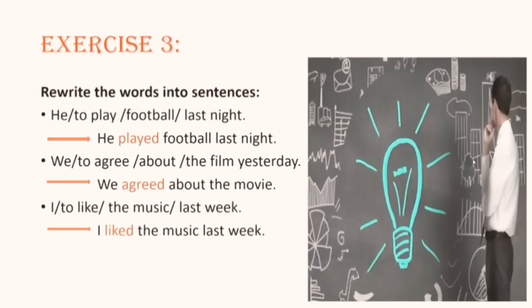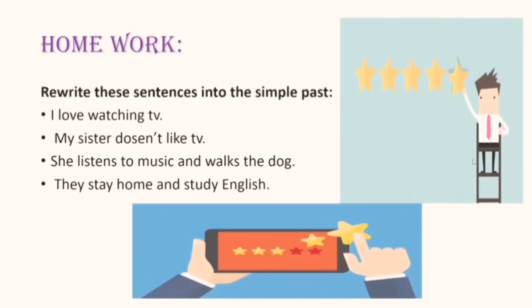So for the last thing we have to do is your homework, and it's going to be very simple again, just to help you remember the forms and practice your simple past form. Your homework, listen carefully. You have to rewrite these sentences into the simple past. Look at sentence number one: I love watching TV. Which tense do you have here? Remember which tense? This tense we had the review of it in the last video at the beginning. Which tense is it? This is simple present. I love watching TV. Which form is this? Is it affirmative, negative, interrogative? What do you think? It's affirmative, of course.